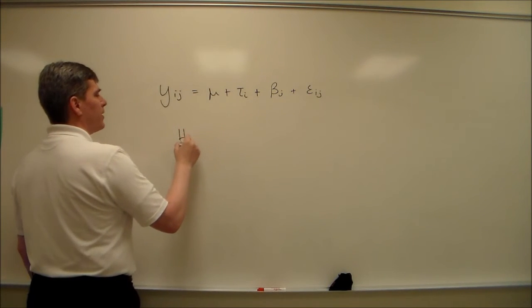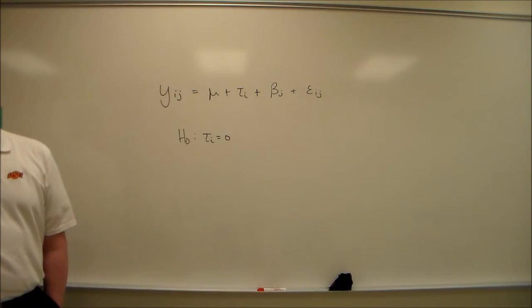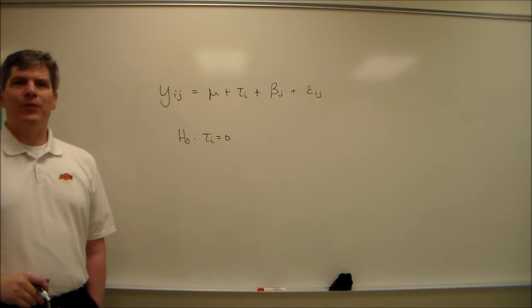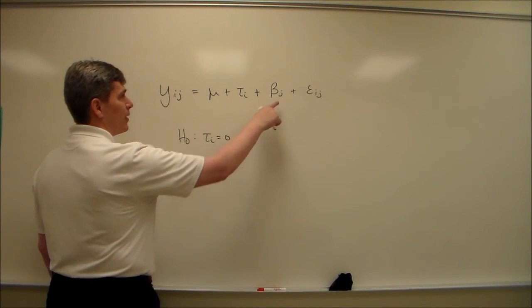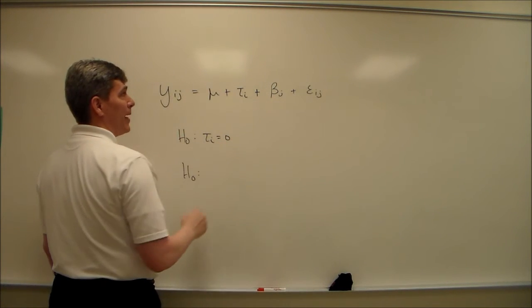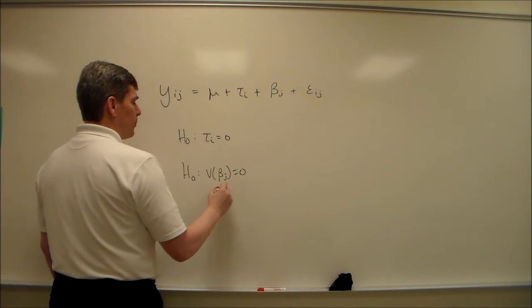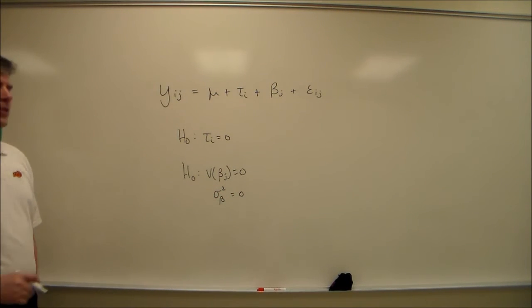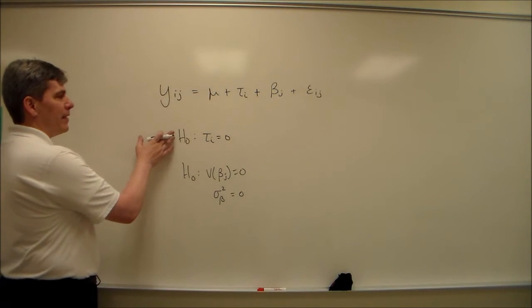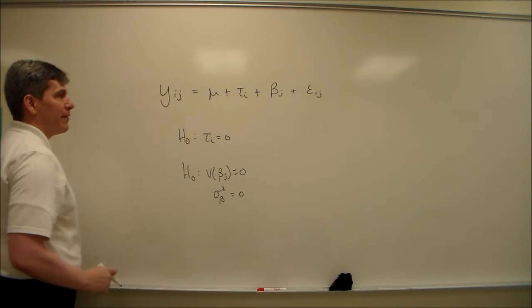So we've got our set of null hypotheses that deal with the tau. And we know how to do those. We've been doing those, that was the entire first half of the course, more or less. But we've also got these null hypotheses dealing with the betas. And the variance of the beta j equals zero. Which again, the book will write as sigma squared sub beta. Which is a good idea. So this is the type of hypothesis that you'd be looking at for a fixed effect. And this is what you'd be looking at for the random effect.